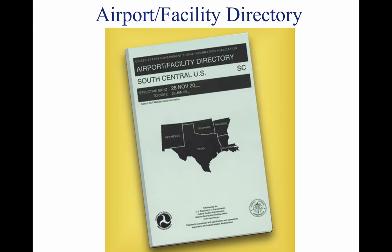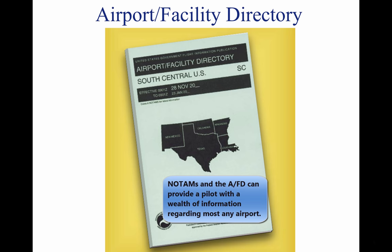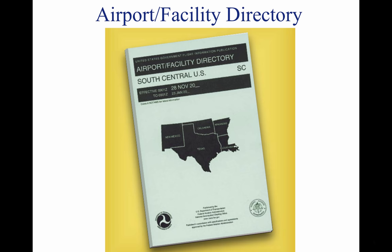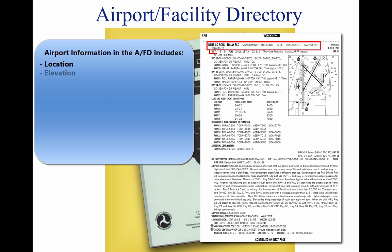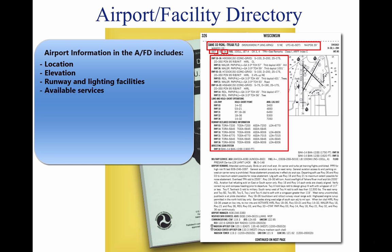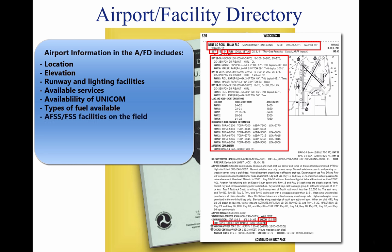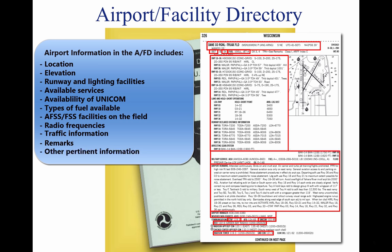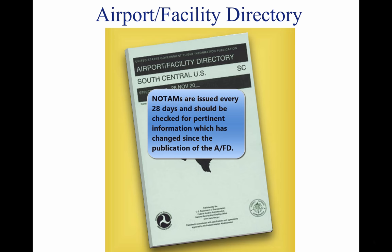Study available information about each airport at which a landing is intended. This should include a study of the Notices to Airmen and the AFD. This includes location, elevation, runway and lighting facilities, available services, availability of Aeronautical Advisory Station Frequency, types of fuel available used to decide on refueling stops, AFSS/FSS located on the airport, control tower and ground control frequencies, traffic information, remarks, and other pertinent information. The NOTAMs, issued every 28 days, should be checked for additional information on hazardous conditions or changes that have been made since issuance of the AFD.